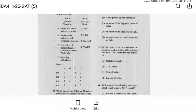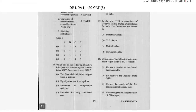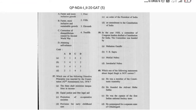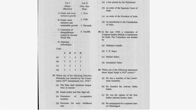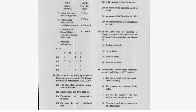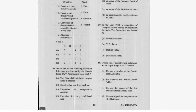Question 59: In the year 1928, a committee of Congress leaders drafted a constitution for India. The committee was headed by Motilal Nehru. Option C is correct.